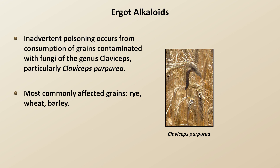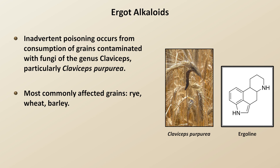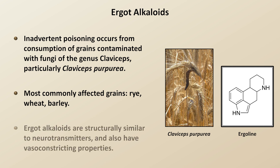This category of chemicals, called ergot alkaloids, is fairly diverse, and different amounts of different alkaloids can be produced depending upon the species and the conditions. But all of them incorporate this four-ringed compound called ergoline into their structure, which results in them having similar actions in the human body as some neurotransmitters, and it also gives some of these compounds vasoconstricting properties as well.